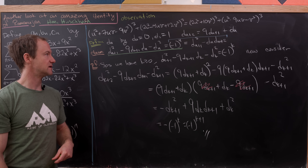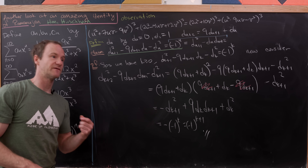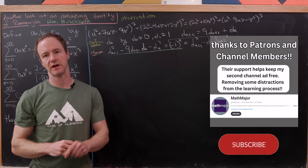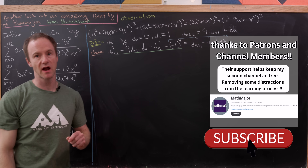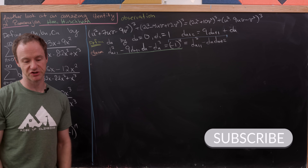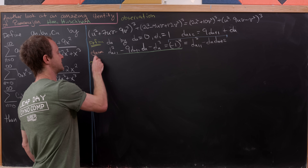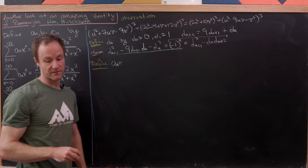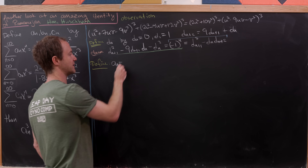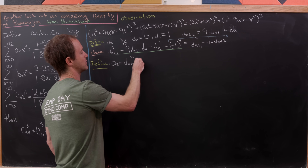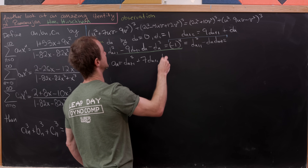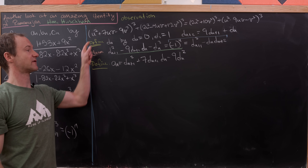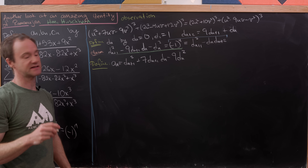Now let's define our sequences A_N, B_N, and C_N via the sequence D_N. We define A_N as D(N+1)² + 7·D(N+1)·D(N) − 9·D(N)² — notice this looks like the first polynomial expression in U and V with U = D(N+1) and V = D(N).